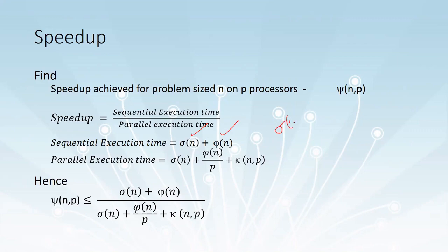Sigma of n represents the time required to execute the sequential part, and phi of n is the time required to execute the parallel part. Since there is no more than one processor, sigma of n plus phi of n will be the total execution time for a serial program.